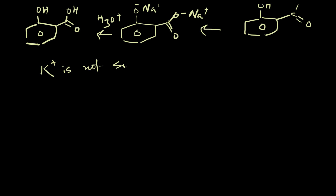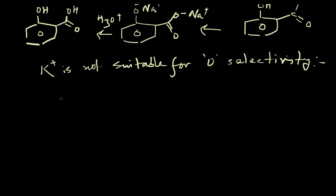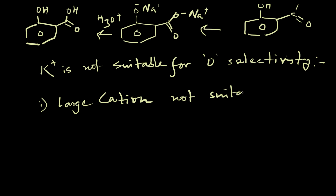Potassium⁺ is not suitable for ortho selectivity. If you replace the sodium phenoxide with potassium phenoxide, the reaction happens but the ortho selectivity is much more lowered compared to when sodium is used. The reason is that the potassium⁺ ion, being a large ion, is not suitable for chelation, and that's why the ortho selectivity is lost.